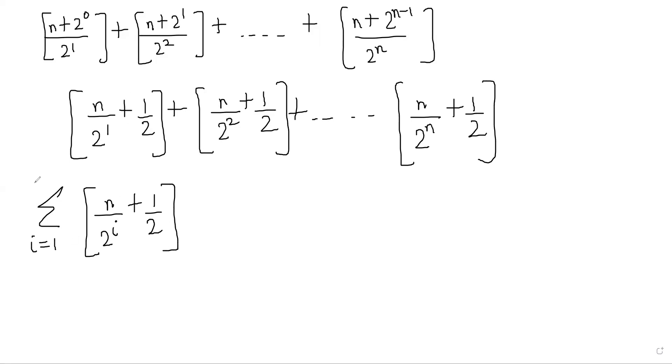Now using the identity, I can write this as floor of 2 times x—here x is n by 2 to the i plus half—which is floor of 2x minus floor of x. Therefore this becomes floor of n by 2 to the i minus 1 minus floor of n by 2 to the i, and we sum this expression where i goes from 1 to n.